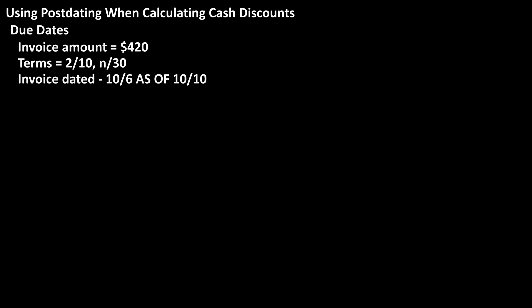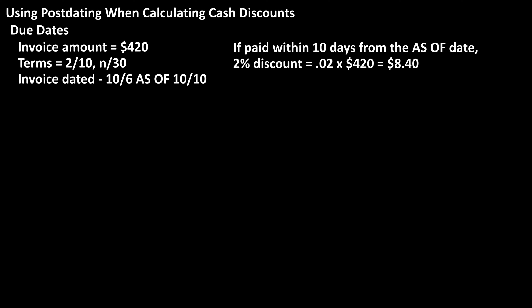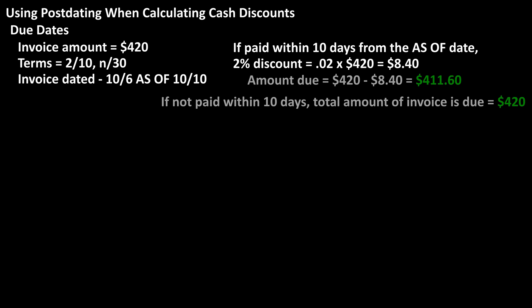Let's say that an invoice for $420 states 2/10 net 30, and the invoice is dated 10-6 as of 10-10. So if the invoice is paid within 10 days from the as of date, there is a 2% cash discount. I've done the calculations for the discount on the screen, which results in $411.60.